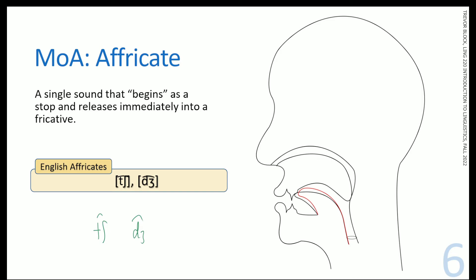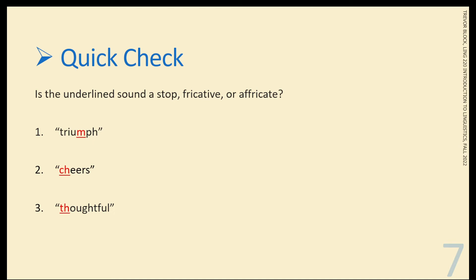There are some other languages that have different affricates like German has pf. In Greek, you have ts. In Mandarin, as you'll see, you have to figure that out on your assignment. In fact, some people even say English has ts at the ends of words, but we're not going to get into that. So that's an affricate.